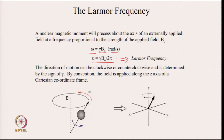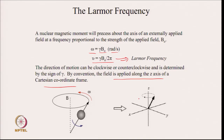ω = γB₀ in radian per second, and ν = γB₀/2π in hertz — this is known as the Larmor frequency. The direction of motion can be clockwise or anti-clockwise and is determined by the value of γ. Generally, the field is applied along the Z axis of the Cartesian coordinate frame. If the magnetic field strength is B₀, then the frequency of Larmor precession is ω₀ = −γB₀, or in hertz, ν = −(1/2π)γB₀.